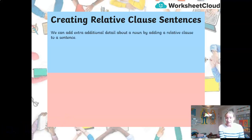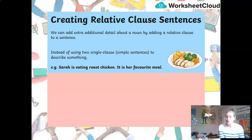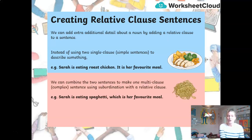So, what is a relative clause? Well, a relative clause is used when we want to add additional information or extra detail about a noun into a sentence. Instead of using two simple sentences, such as 'Sarah is eating roast chicken. It is her favourite meal,' we combine those two sentences into making a complex sentence with a relative clause. And a relative clause is a form of a subordinate clause.